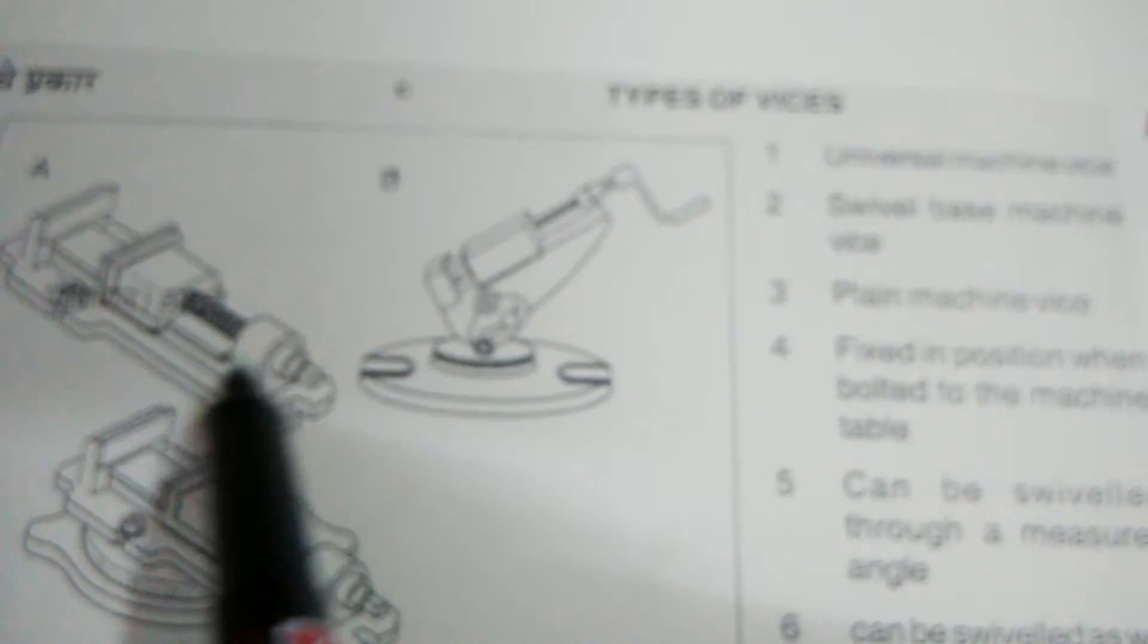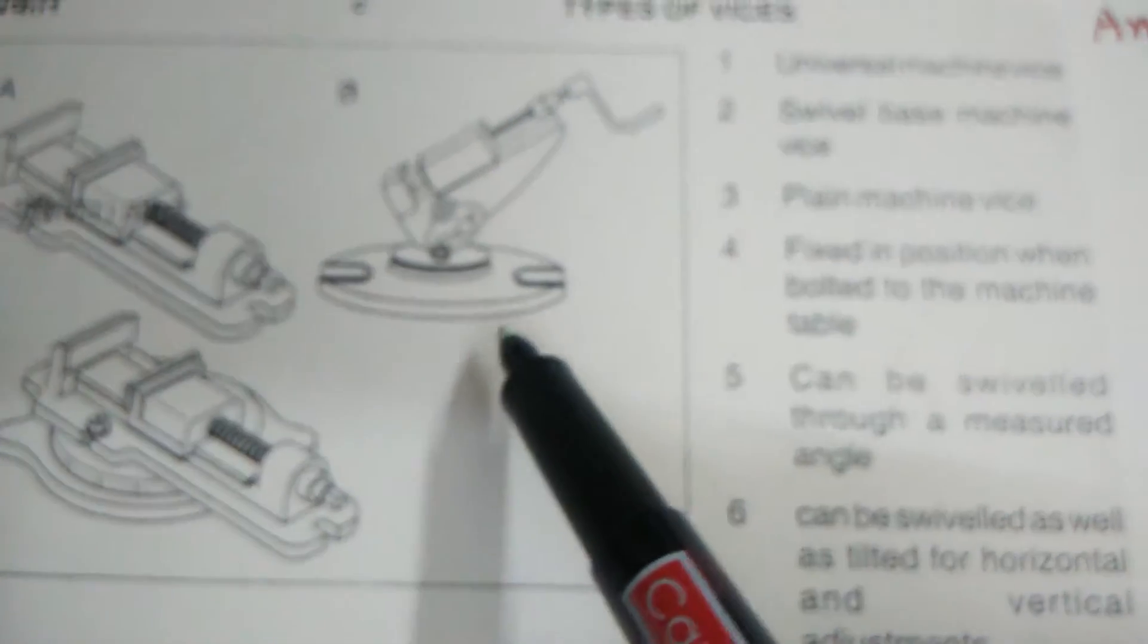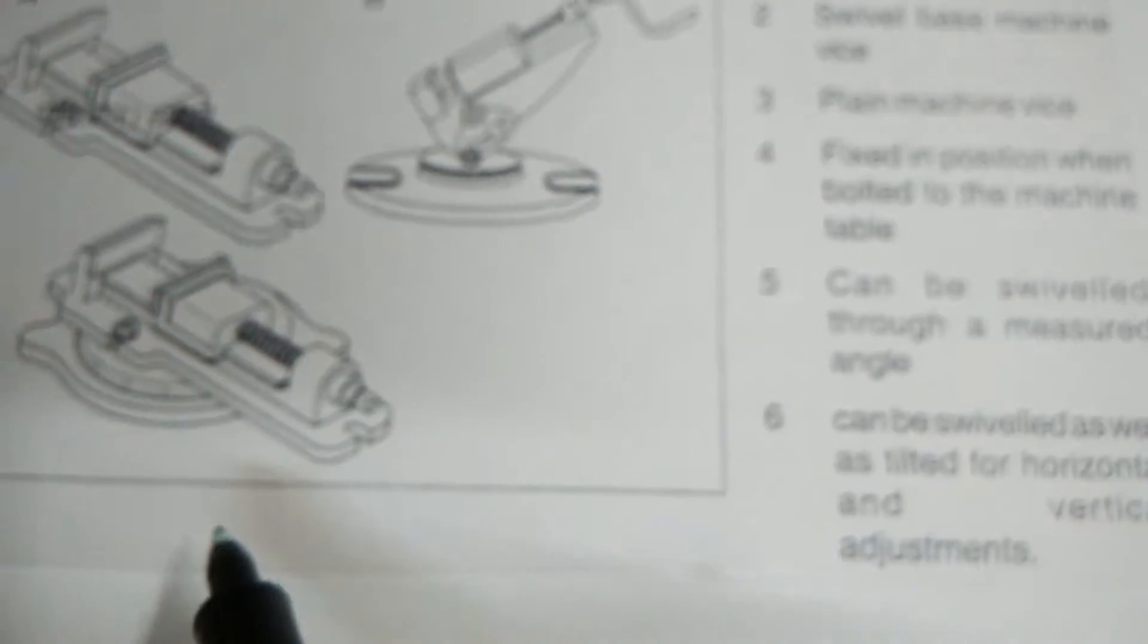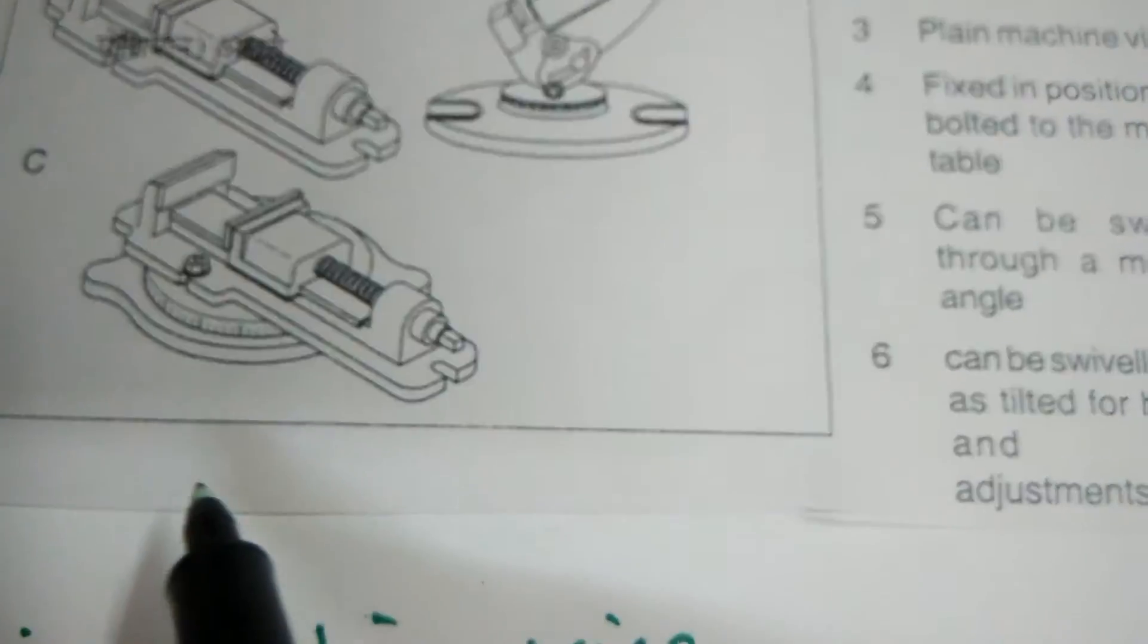In this diagram, A is Plain Machine Vice, B is Universal Machine Vice, and C is Swivel-based Machine Vice.